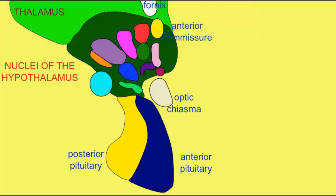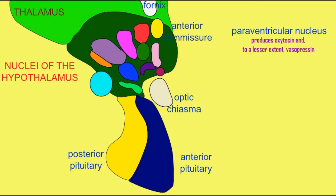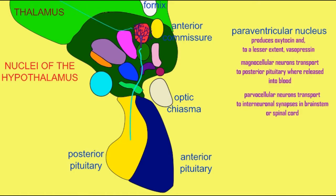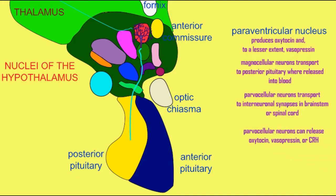These neuropeptides are primarily expressed in two nuclei of the hypothalamus. The paraventricular nuclei produce oxytocin primarily, but also vasopressin to a lesser degree. They have large magnocellular neurons, which transport oxytocin and ADH to the posterior pituitary, in addition to smaller parvocellular neurons, which can transport oxytocin to other regions of the brainstem and spinal cord.